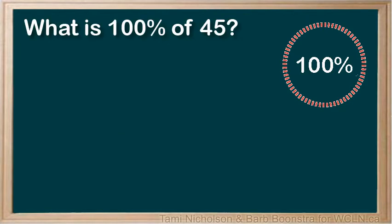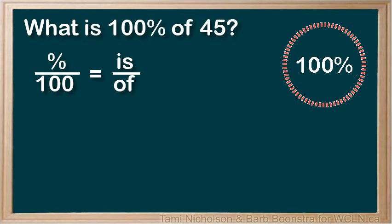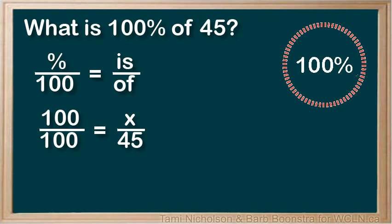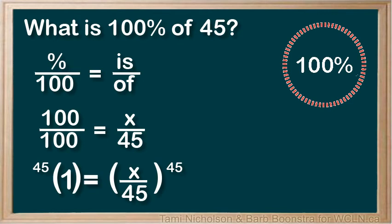Remember that 100% as a decimal is 1, so multiplying by 100% is like multiplying by 1. Here is an example: What is 100% of 45? Use the ratio Percent over 100 equals Is over Of. Substitute our values: 100 for percent and 45 for Of. 100 over 100 equals x over 45. Solve to see that x equals 45. So, 100% of 45 is 45. You can see that taking 100% of something is very similar to just multiplying something by 1.